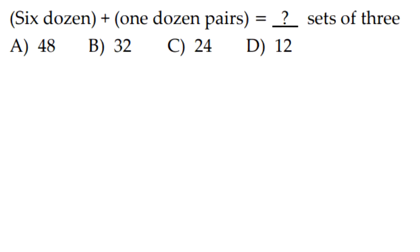That question is: 6 dozen plus 1 dozen pairs equals blank sets of 3. So, a dozen pairs, a pair is 2. So that would be 2 dozen plus 6 dozen, which is 8 dozen. And 8 dozen times 12, because that's how much 1 dozen equals, is 96. And now, 96 divided by 3, because they're asking about sets of 3, would be 32.